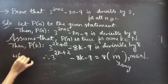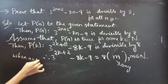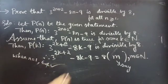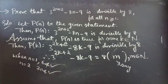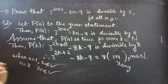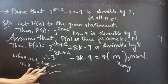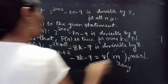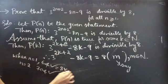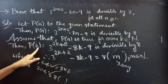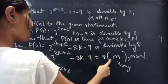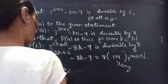When n equals to 1 we got 64, which is a positive natural number. When n equals to 2, we got 704, which is a positive natural number. This means the numbers are positive, so these numbers belong to natural numbers. Since 64 is 8 times 8, and 704 is 8 times some number, likewise for P of k we will get 8 times some number which belongs to natural numbers.